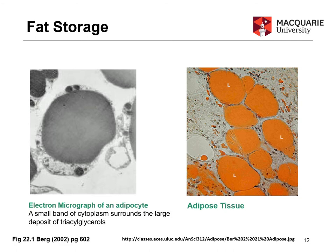We store fat in adipose tissues — the orange sections in the image on the right are fat molecules. It's a highly concentrated form of energy stored for later use. Thinking back to the macronutrients video and the energy equation: if you're eating more than you're expending, you'll have an imbalance and will be storing fats.